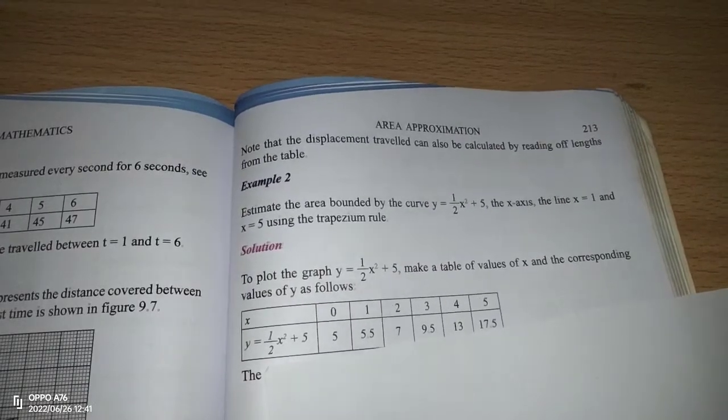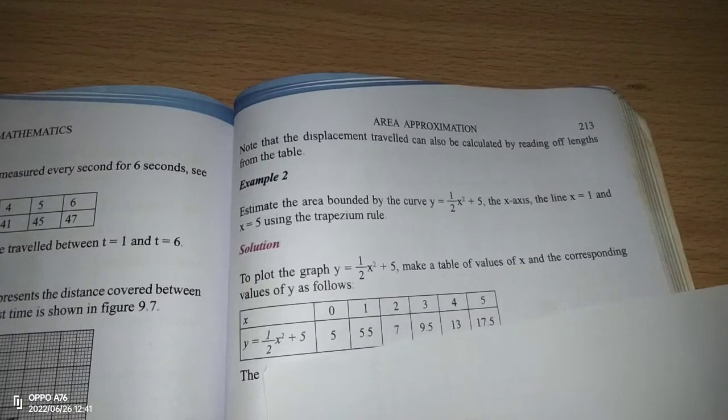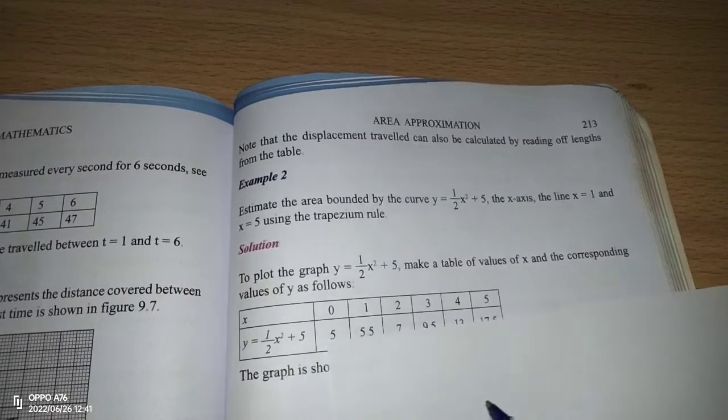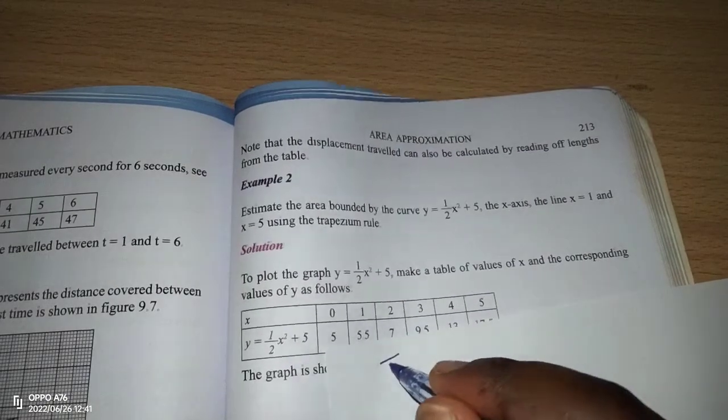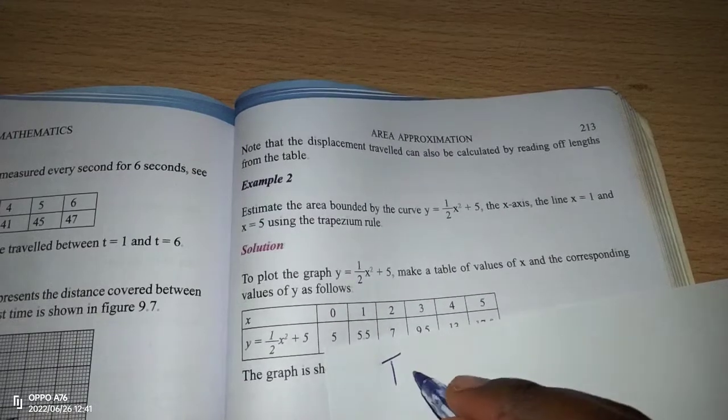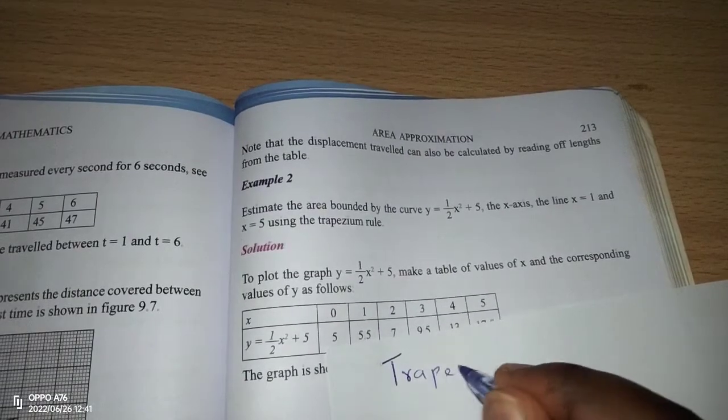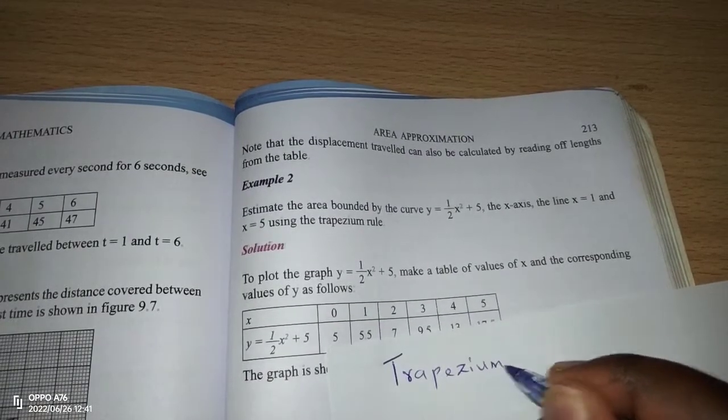We're going to look at area approximation, and the first method to be considered is what we call the trapezoidal rule, or the trapezium method.